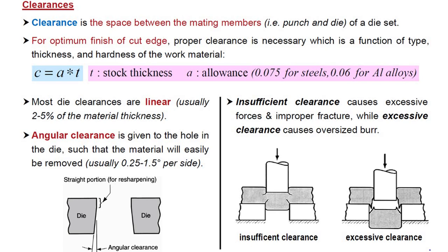What if we don't provide enough clearance? Insufficient clearance causes excessive forces on the workpiece, leading to improper fracture. As shown in the figures, excessive clearance — more than the required amount — causes oversized burrs coming out of the workpiece.